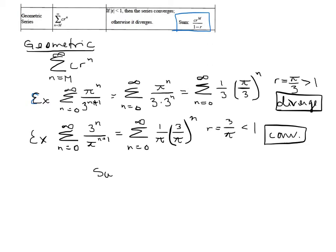And I can actually find its sum. So the sum of this is going to equal C, which is the number that's out in front, which is 1 over pi in this case. So C is out in front, and then going into the formula here, times R, which is 3 over pi raised to the M. The M is what the sum starts with, so that's to the zero, divided by 1 minus 3 over pi.